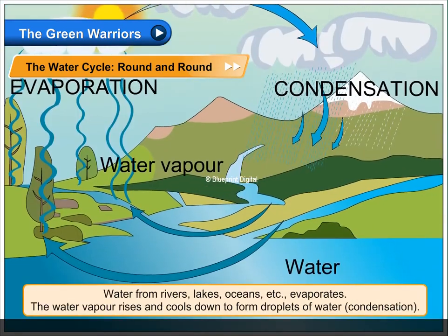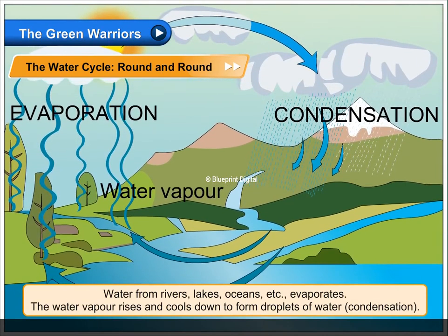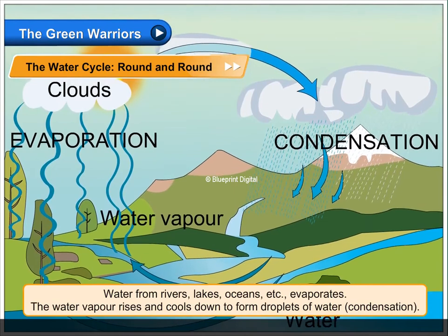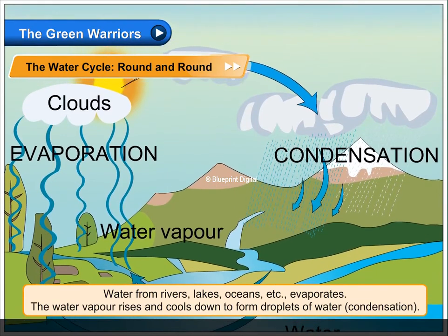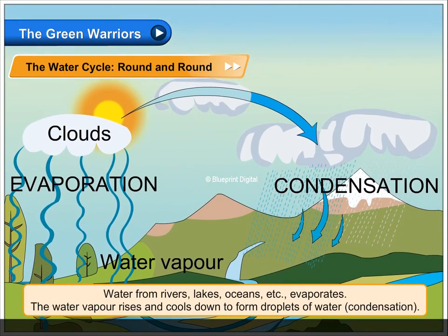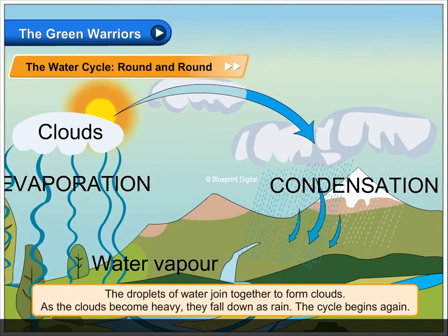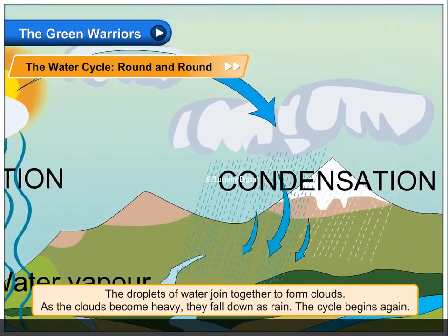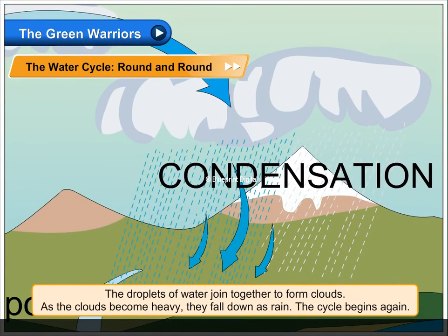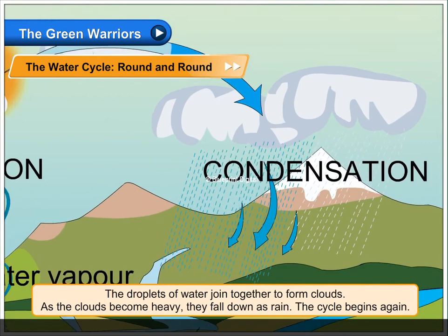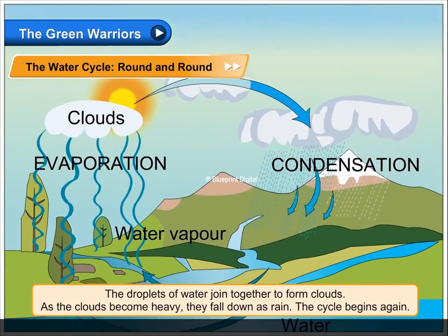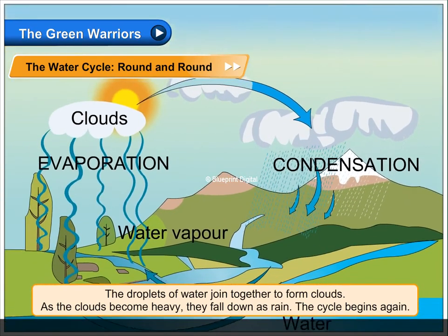Water from rivers, lakes, oceans, etc. evaporates. The water vapour rises and cools down to form droplets of water — condensation. The droplets of water join together to form clouds. As the clouds become heavy, they fall down as rain. The cycle begins again.